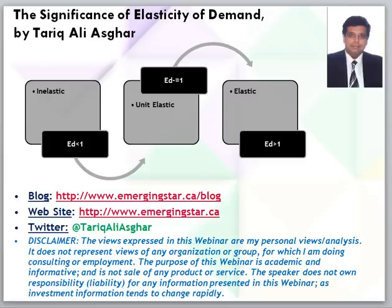The elasticity of demand is greater for products when there are more substitutes for the good. For example, demand for luxury goods is much more elastic, whereas demand for goods like oil, which has no close substitute, is highly inelastic.